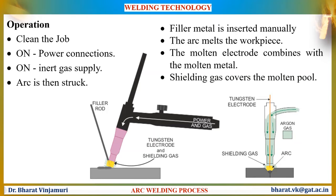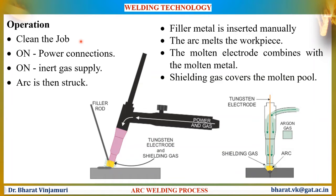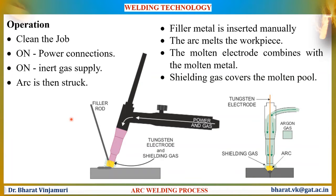The operation and working of the TIG process is similar to any other welding process. Before starting this welding, the operator has to clean the job to remove contaminations like grease and dirt on the workpiece. Later, the power connections as well as the supply of inert gas has to be switched on. Now the arc is struck between the electrode and the workpiece, and to maintain a constant arc, a gap of 2–4 mm has to be maintained continuously by the welder.